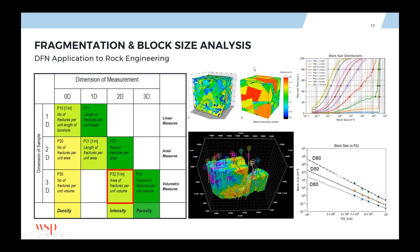The fragmentation curves are actually dependent on P32. Taking a simple DFN model, we can map that into blocks and turn them into a fragmentation curve. Each curve represents a different P32 — starting at low P32 on the right, and as we increase the amount of fracturing, these fragmentation curves move to the left as sizes get smaller. We can block-model that P32 property, which gives us a way to spatially predict something about fragmentation through the rock mass.